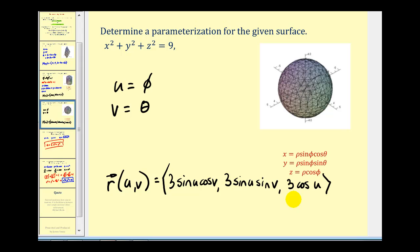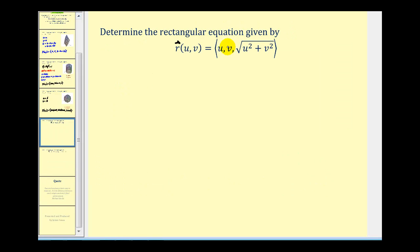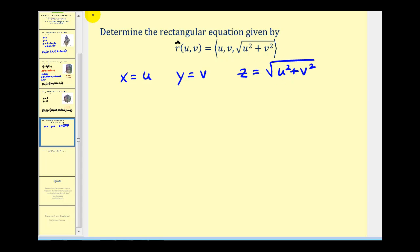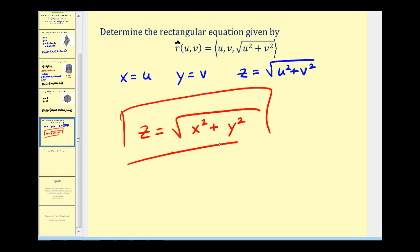Now let's take a look at a couple problems where we're given the parametrization and want to determine the rectangular equation. Here we know that x equals u, y equals v, and z equals the square root of u squared plus v squared. This first one is pretty straightforward. We substitute u equal x and v equal y, giving us z equals the square root of x squared plus y squared.